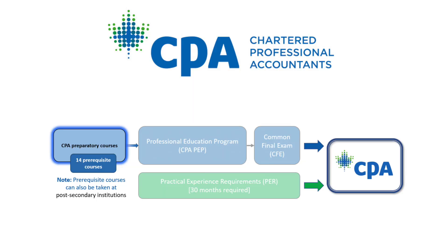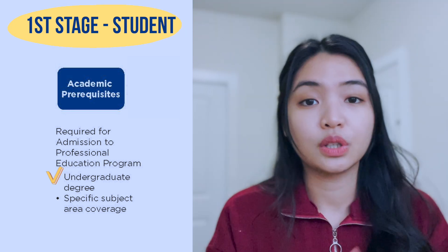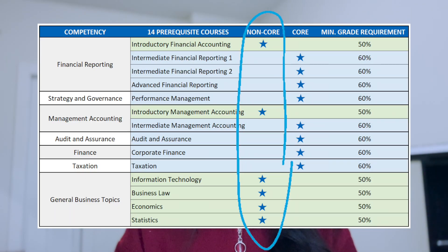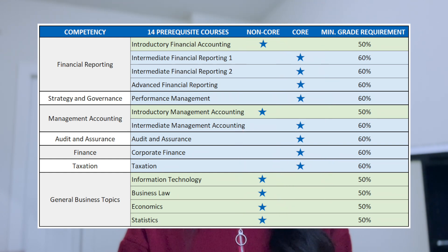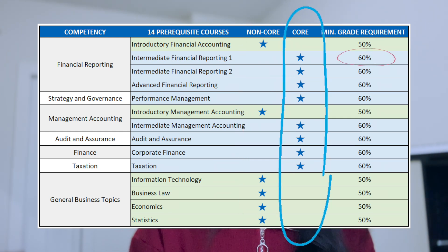Let's take a look at the illustration on the screen right now. There are three stages. The first stage is becoming a student — someone who is enrolled in a program providing prerequisite courses. To enter the second stage, the CPA PEP program, you need an undergraduate degree in any area of study and you must have completed 14 prerequisite courses. There are six non-core courses requiring at least a 50% passing grade, and eight core courses requiring 60%, with an average total of 65% for the core courses.